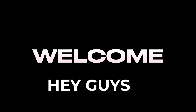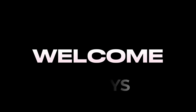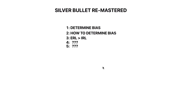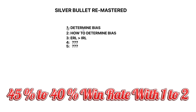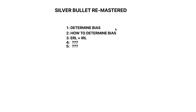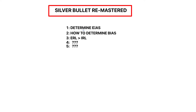Hey guys, welcome back to our video. So this is a new version of Silver Bullet. Now I know if you have been using Silver Bullet in the past, you might know that it doesn't work that well. It has a 45% to 40% win rate with 1 to 2 risk to reward. But it's not something that you should depend on. But this remastered version is very powerful.